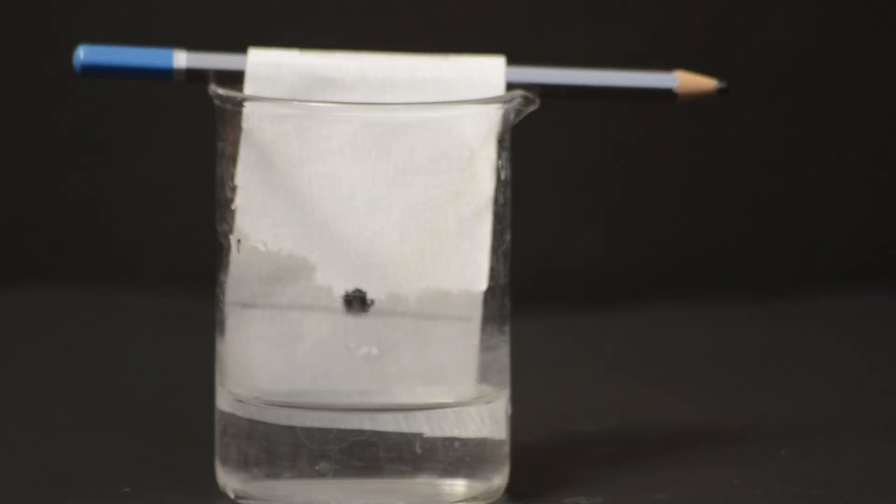Position it so that the drop of ink on the paper is just above the water level, and leave it undisturbed. Here, water acts as a mobile phase.